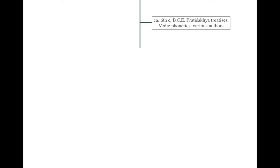When it comes to the predecessors of the Kachayana grammar — those grammars that provide materials from which the Kachayana was built — the earliest extant materials or treatises are called the Pratishakya treatises. They deal with Vedic phonetics, meaning mostly the pronunciation and recitation of Vedic texts, and were composed roughly around the 6th century before the Common Era, though some have earlier materials. We find these materials in the Kachayana too.